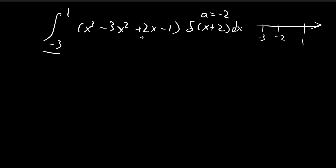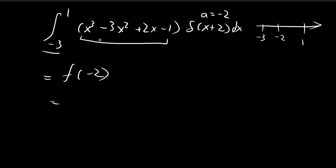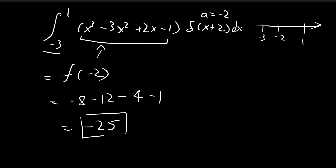This integral is just equal to f(a), where f(x) is the polynomial. So we evaluate f(-2): that gives (-2)³ - 3(-2)² + 2(-2) - 1, which is -8 - 12 - 4 - 1, equal to -25. So -25 is the value of the integral for part a.